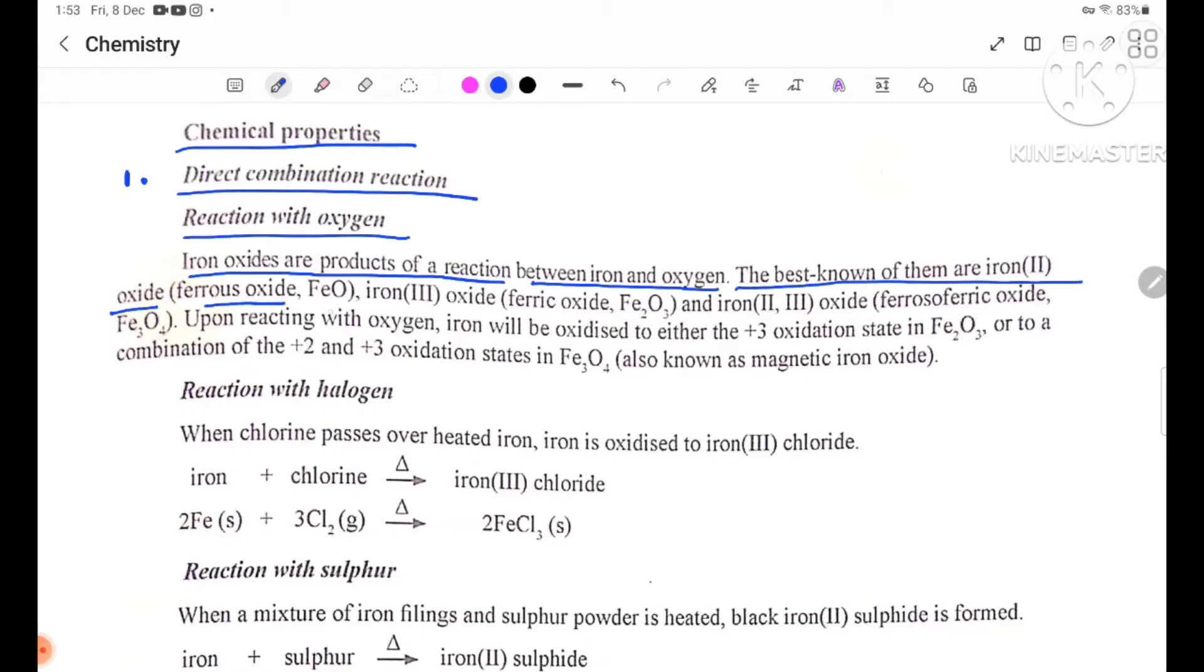Iron(III) oxide, ferric oxide Fe2O3, and iron(II,III) oxide, ferrous ferric oxide Fe3O4. Iron and oxygen bond to form iron oxide.